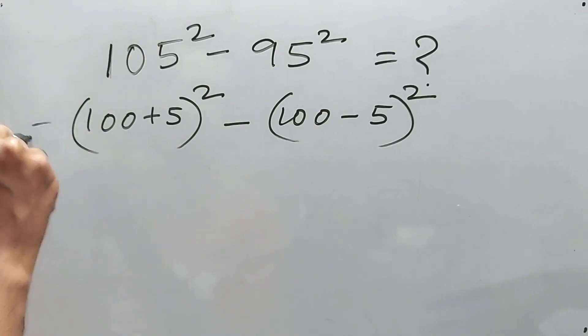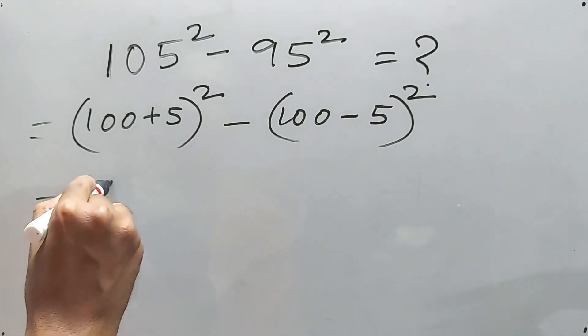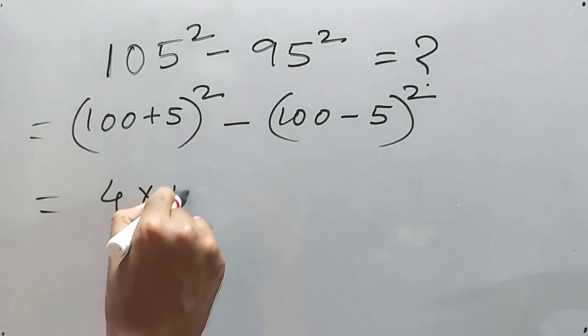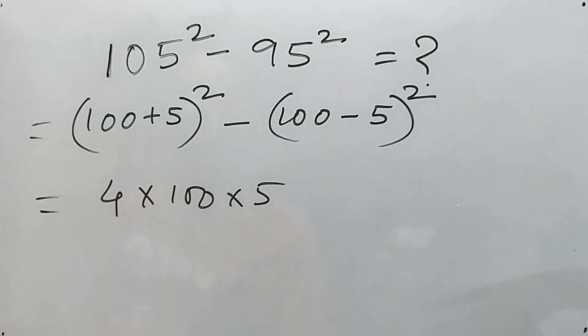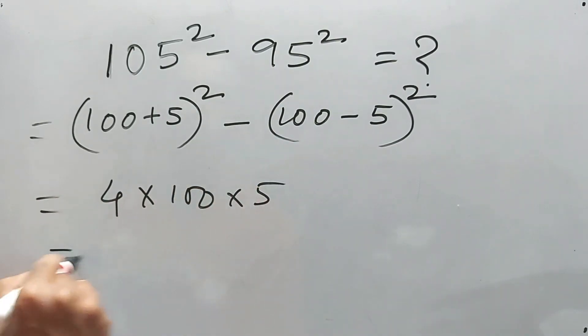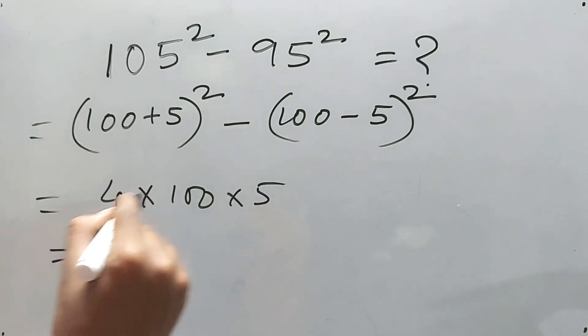That means here we'll get 4 into 100 into 5, right? So 4 into 5 is 20, 20 into 100 is 2000. This is your answer. You like it? This is the simplest trick, my friend.